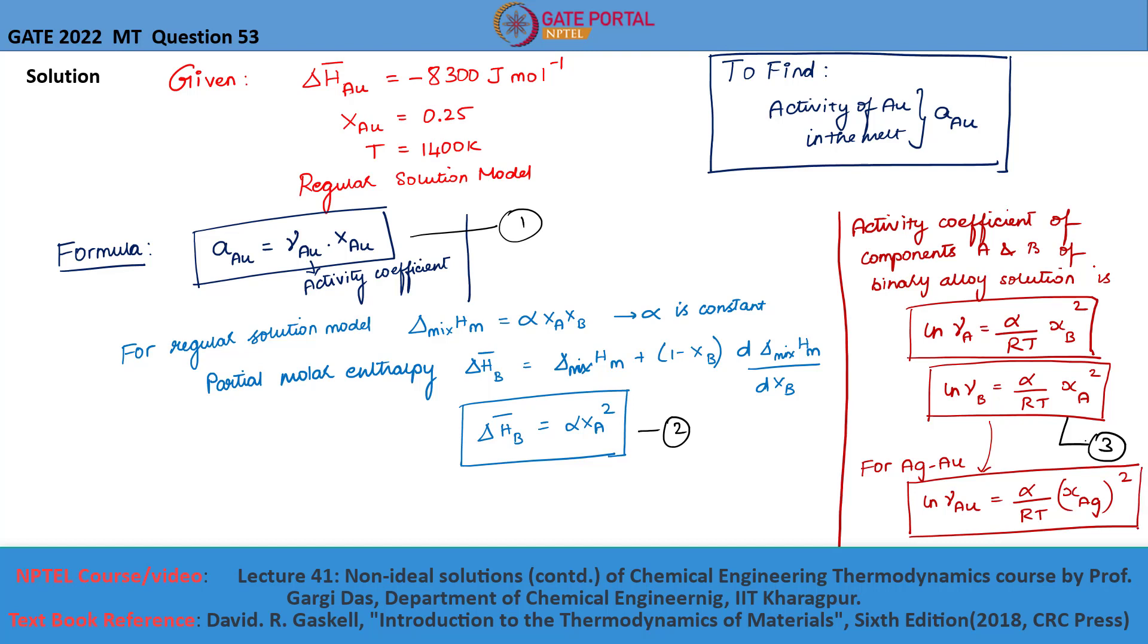In this equation, the value of alpha is unknown, which can be found from equation 2, where alpha equals the partial molar enthalpy of gold divided by mole fraction of silver square. On substituting this equation into this equation, we will be getting